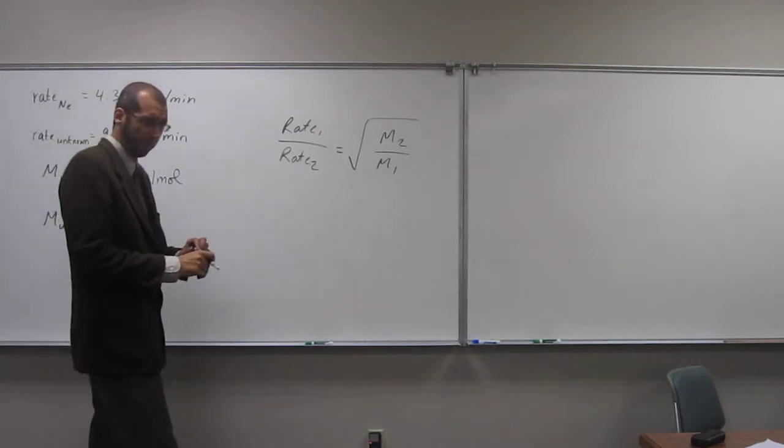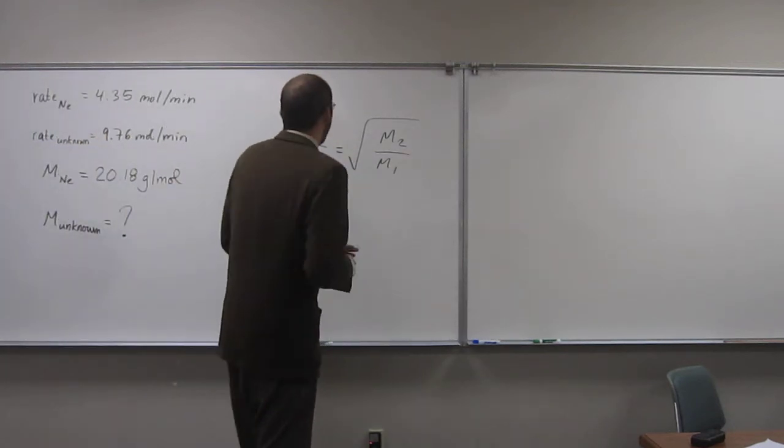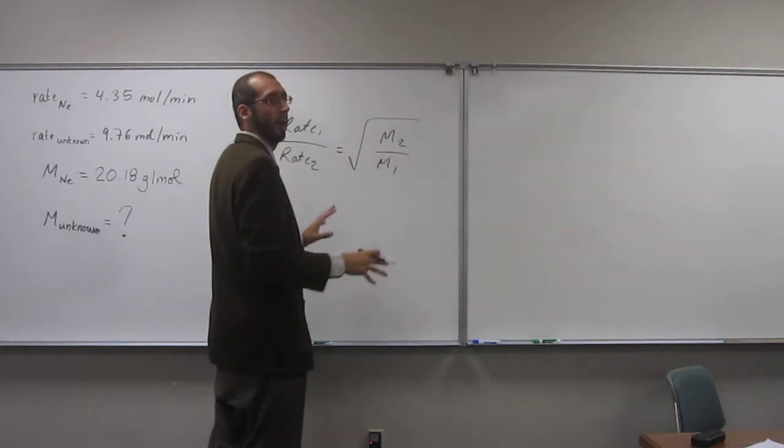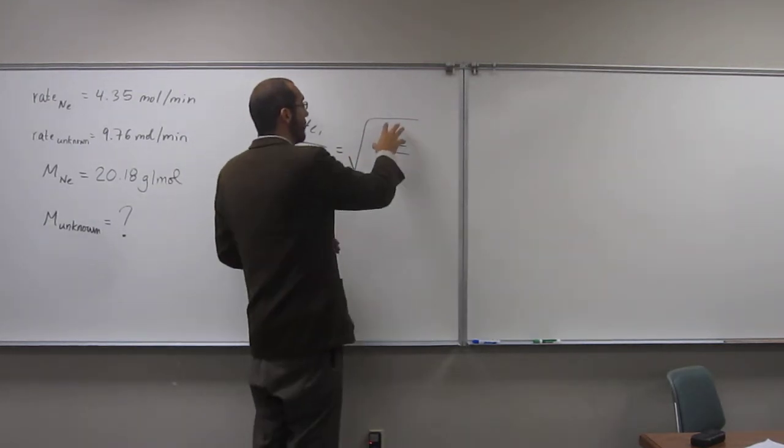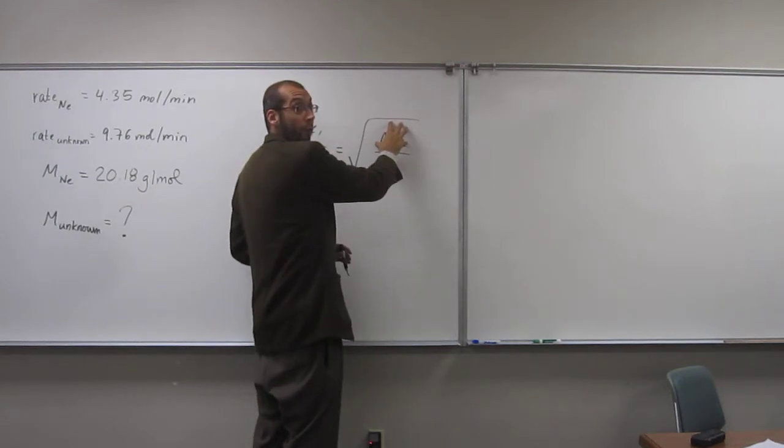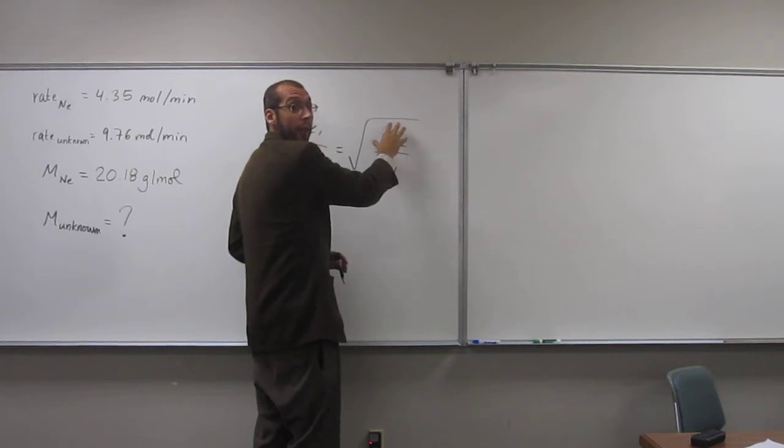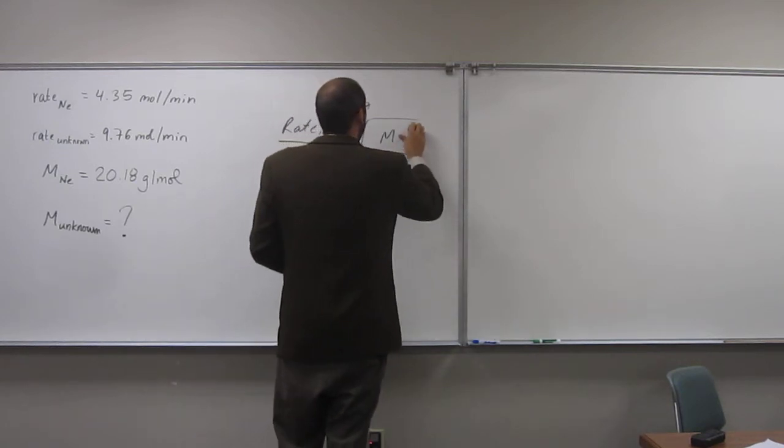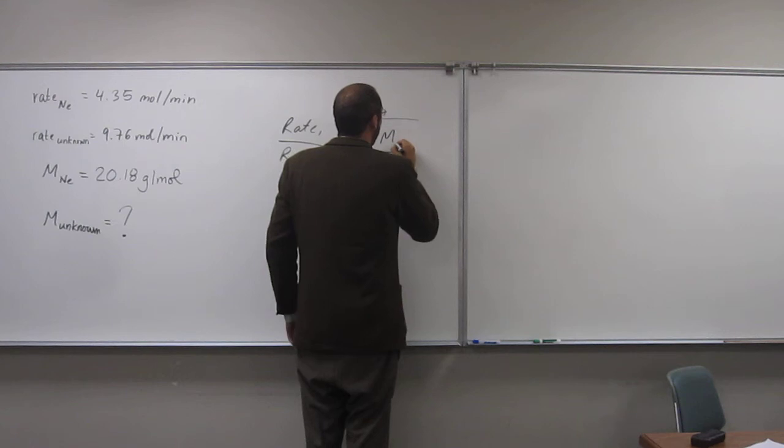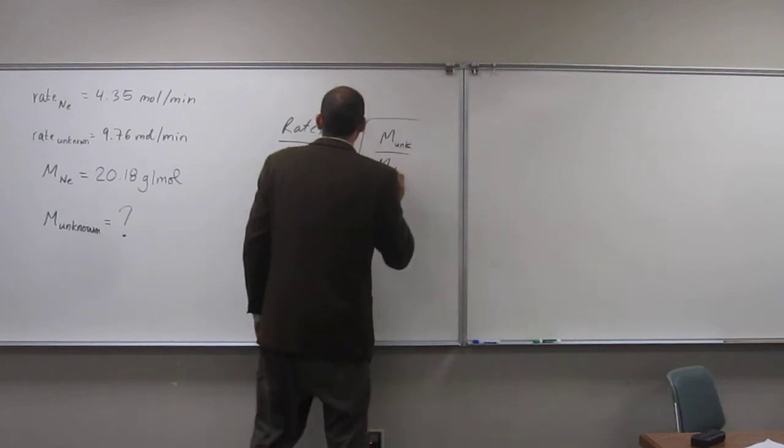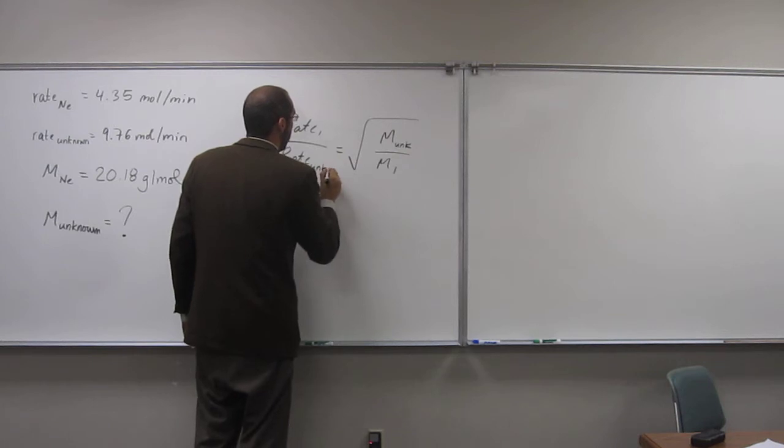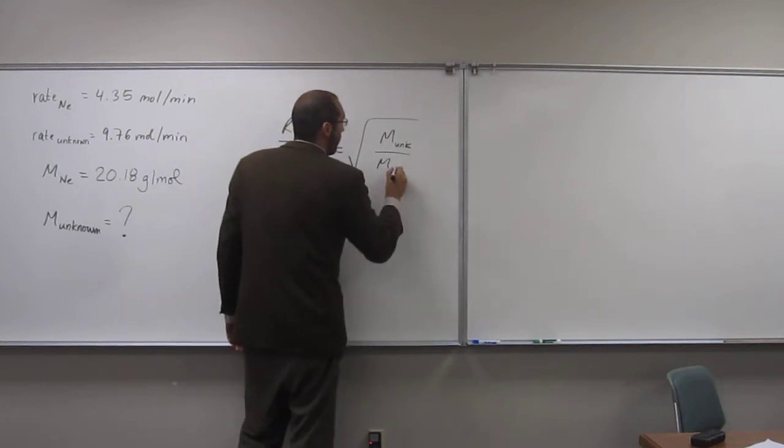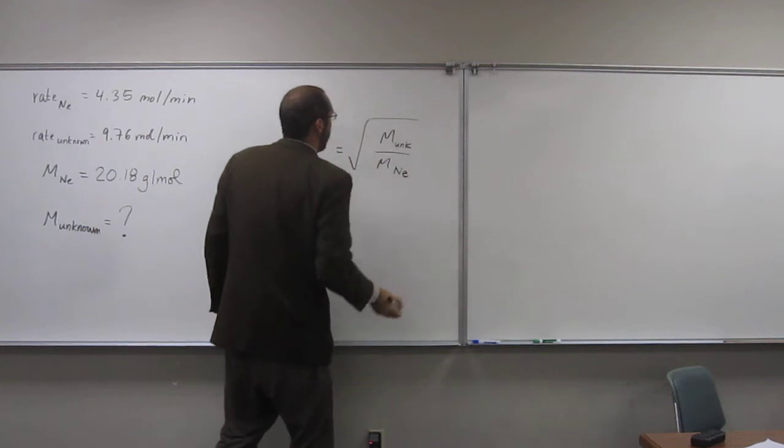So in light of that information, you might want to arrange this equation to make it easier on yourself. So it would be easiest to find this molar mass easier than this. So let's put the unknown gas there. Is going to be neon. Okay?